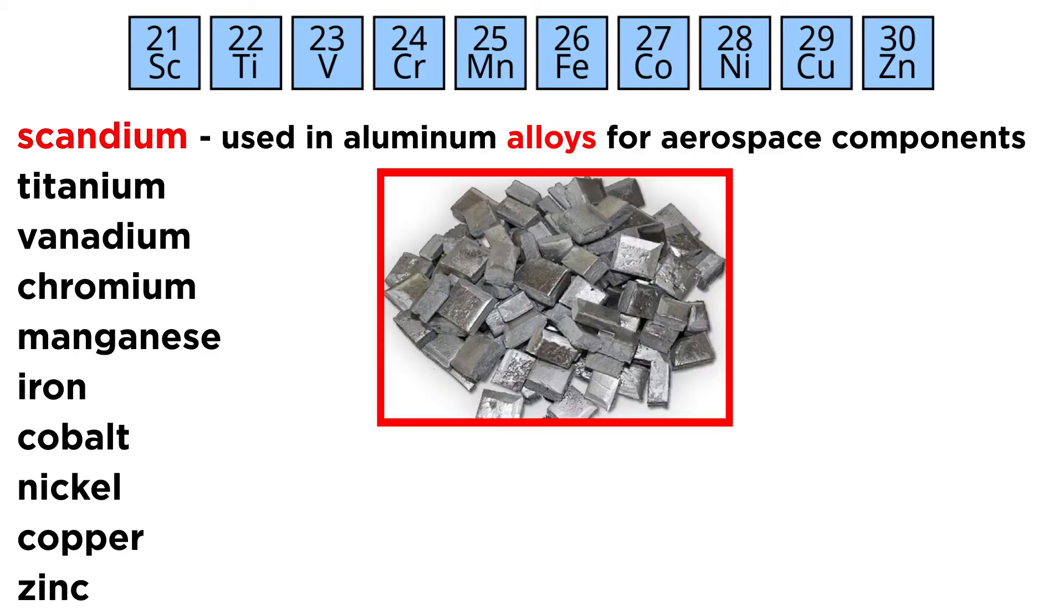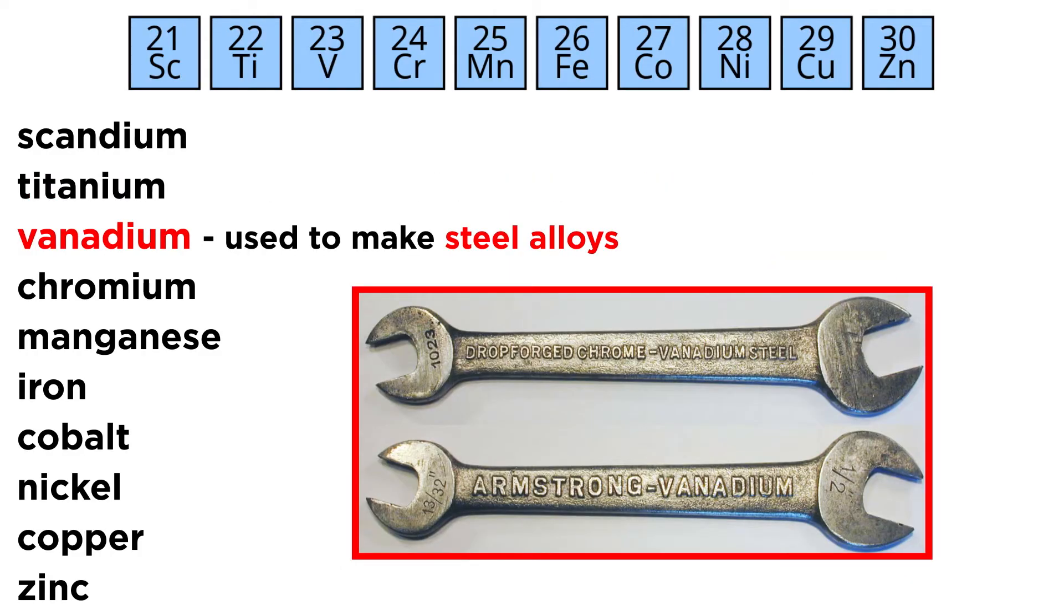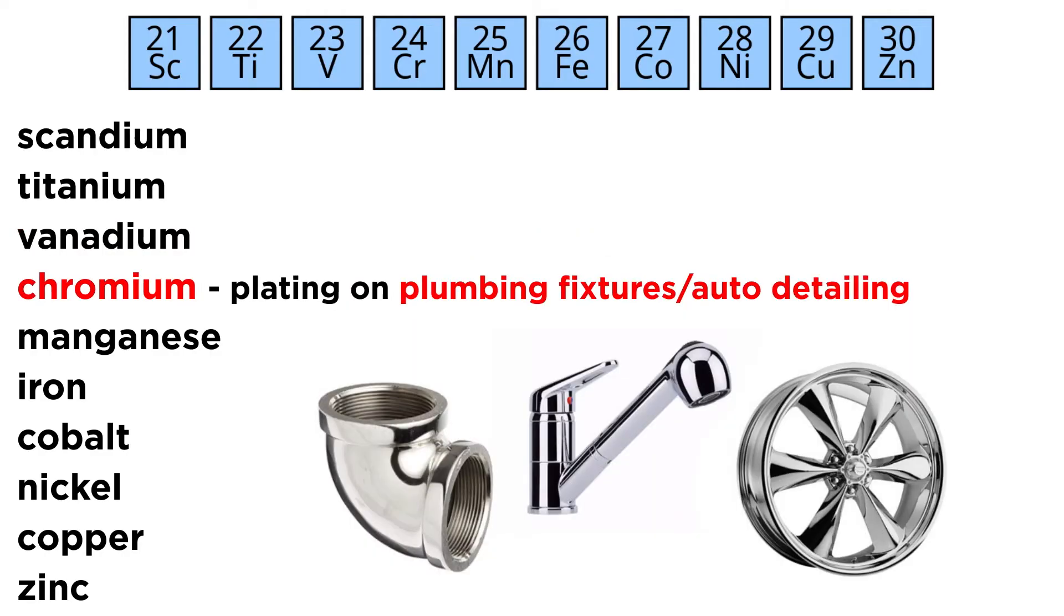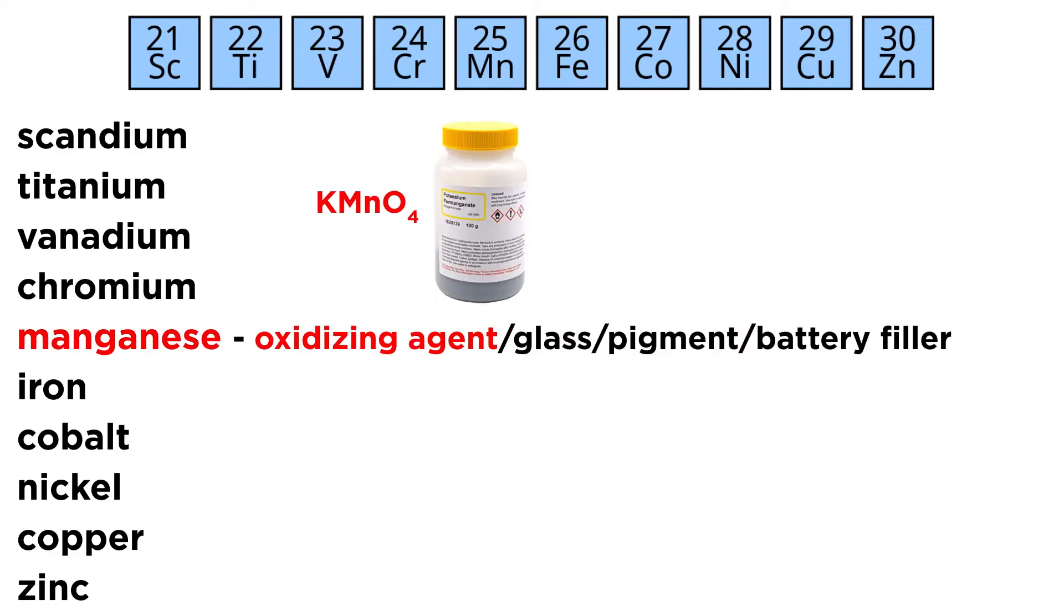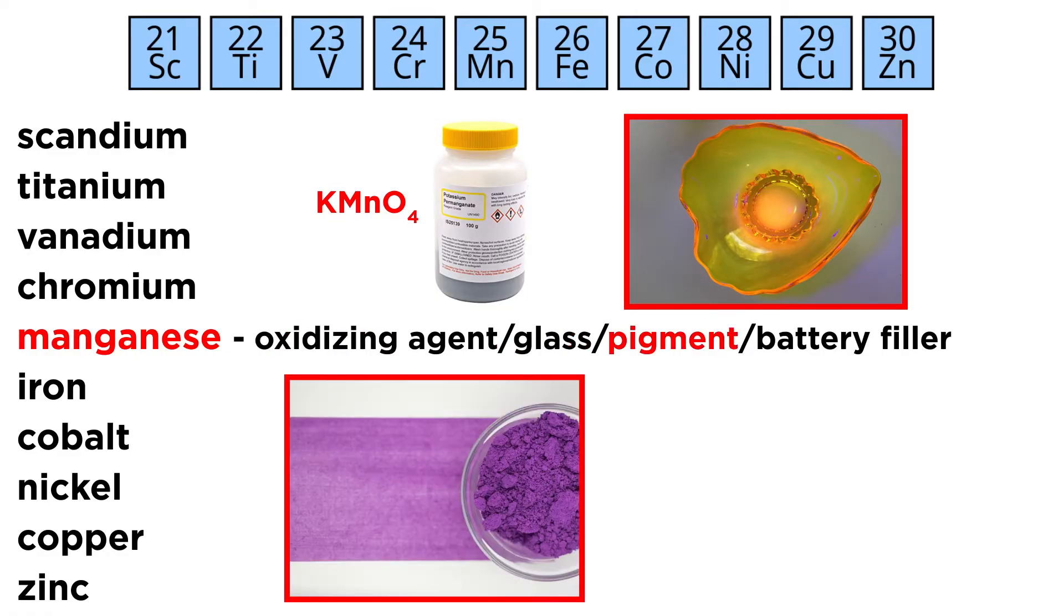Scandium is used in aluminum alloys for aerospace components. Titanium is an important metal for manufacturing lightweight yet durable products, from bicycle frames to artificial hips. Vanadium is used to make steel alloys. Chromium is used as a protective plating on plumbing fixtures and automotive detailing. Manganese should be familiar from oxidizing agents like potassium permanganate. It is also used to make glass, as a pigment, and as filler in dry cell batteries.